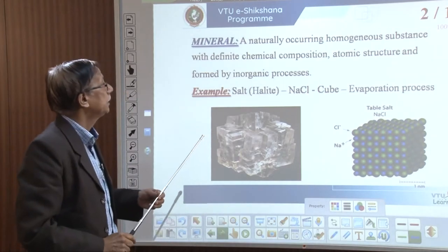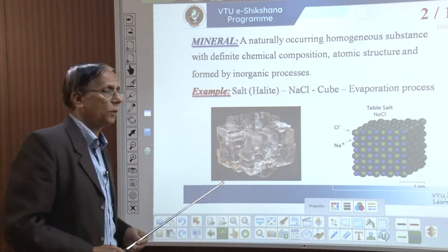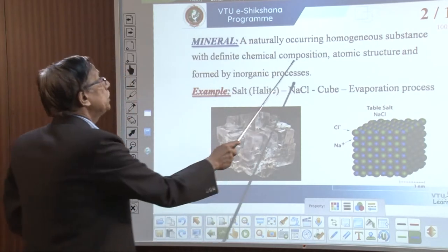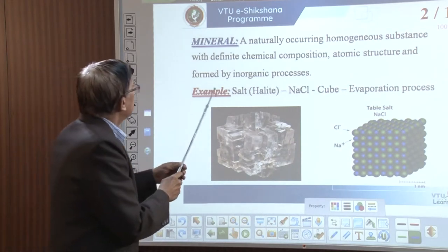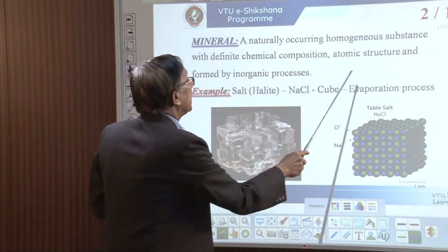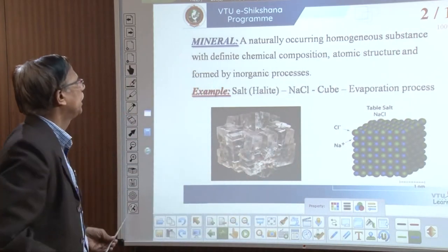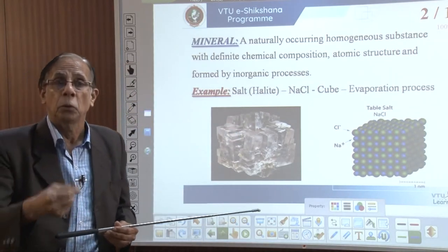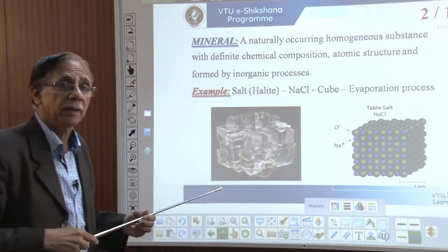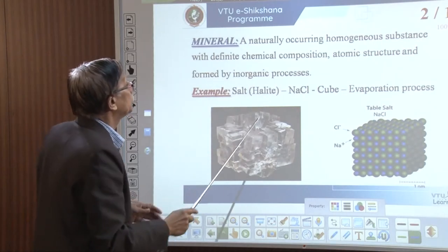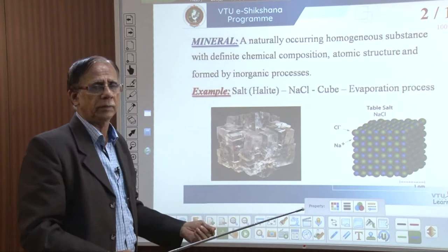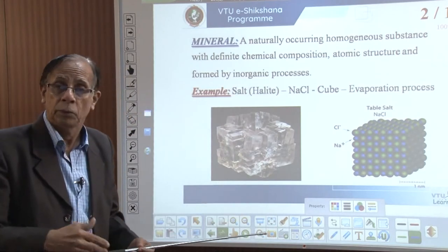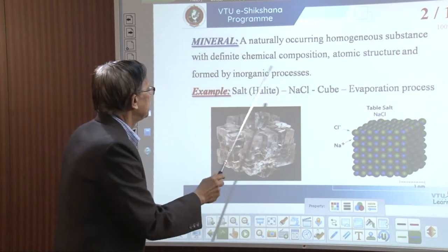Let us begin our discussion on minerals. What is a mineral? It is a naturally occurring, homogeneous substance. It has a definite chemical composition, a definite atomic arrangement or structure, and it is formed by inorganic process. This is the definition of a mineral — very important in understanding. It has definite atomic arrangement, definite chemical composition, it is homogeneous and inorganic.